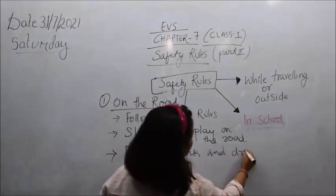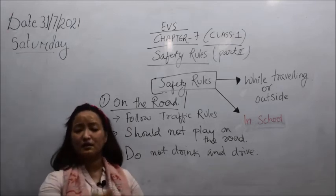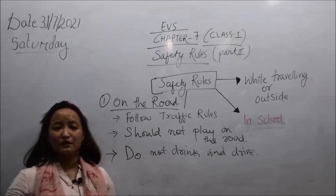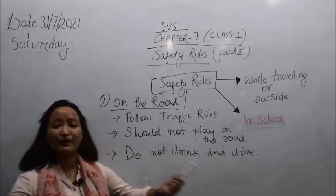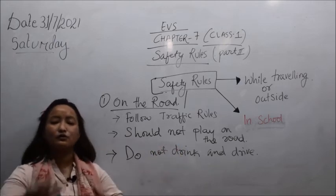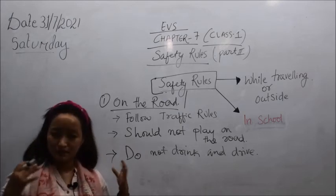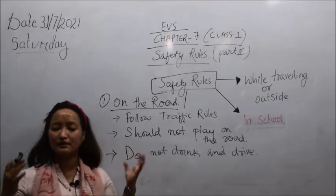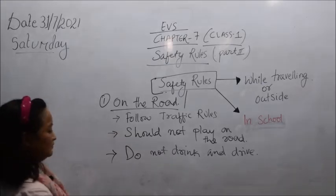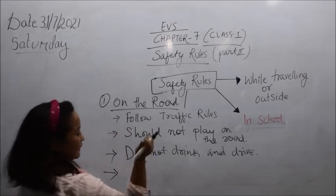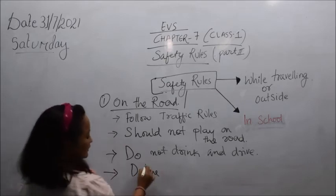Accidents can happen anytime — that's why we have safety rules. Another road rule: do not drink and drive. Especially for adults, after the teenage stage, some people drink and drive recklessly, causing accidents not only to themselves but also to others. Losing a life affects the whole family. Also, drive slowly with a limited speed — there is a speed limit you have to follow.